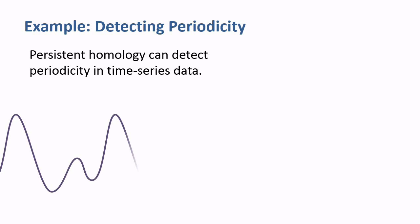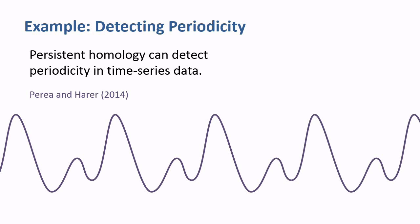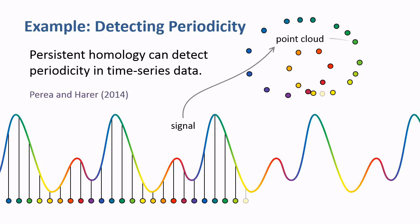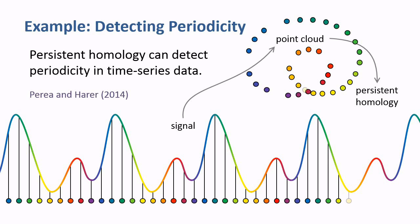For another example, Perea and others use persistent homology to detect periodicity in time series data. Using sliding window embeddings, the researchers converted measurements of a periodic signal into a point cloud in a high dimensional space. Persistent homology applied to the point cloud detects cycles, which correspond to periodicity in the original signal. Applying this methodology to gene expression time series data, the researchers detected periodicity that was missed by other methods, especially periodicity in the presence of damping.